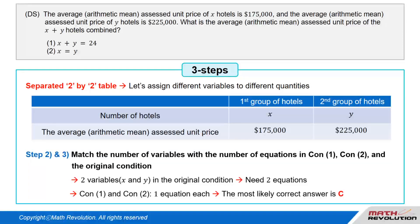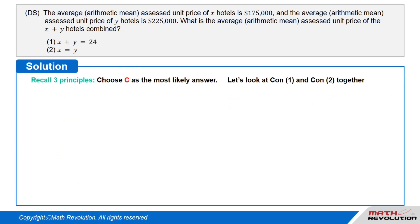Follow the second and third steps. From the original condition, we have two variables, X and Y. To match the number of variables with the number of equations, we need two equations. Since conditions 1 and 2 will each provide one equation, C is about 70% likely to be the answer. Recall the three principles and choose C as the most likely answer.